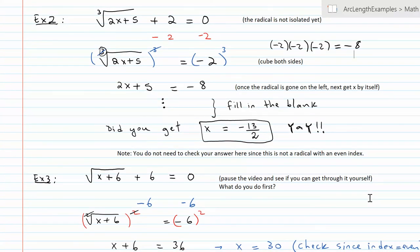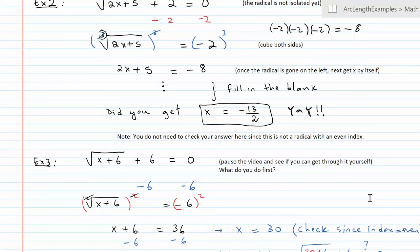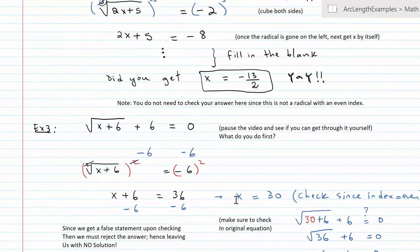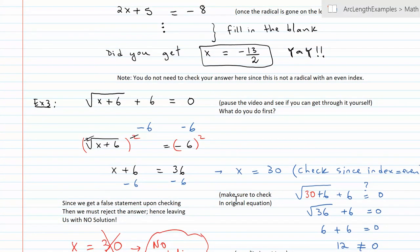And you've realized that the radical needed to be isolated by subtracting 6 from both sides first. And then you can square both sides. Since the radical has an even index, we'll make sure to check our answer in the end. Now, once you solve for x, you get 30.